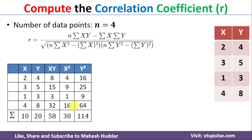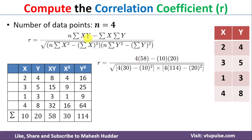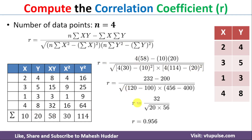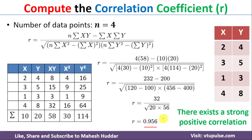Now we substitute all these values into the formula. r = (4 × 58 − 10 × 20) / √[(4 × 30 − 10²)(4 × 114 − 20²)]. Once we simplify this expression, we get r = 0.956, which is nearly equal to 1.